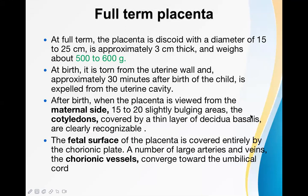At full term, when the placenta is fully developed, it is a disc-shaped structure with a diameter of 15 to 25 centimeters, approximately 3 centimeters thick, and weighs about 500 to 600 grams. These measurements give you a rough idea of how big the placenta is. After delivery of the baby, the placenta must also come out.